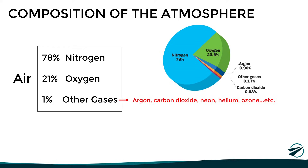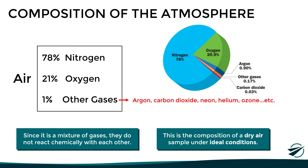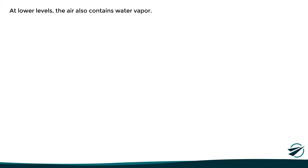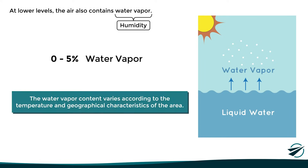It is important to note that since we are talking about a mixture of gases, they do not react chemically with each other, maintaining their original form as inert gases. This is the composition of a dry sample of air under ideal conditions. Because in practice, in the lower levels of the atmosphere, the air also contains water vapor, which is known as humidity. The water vapor content in the atmosphere at sea level normally varies between 0 and 5%, depending on factors such as air temperature or the geographical characteristics of the area.